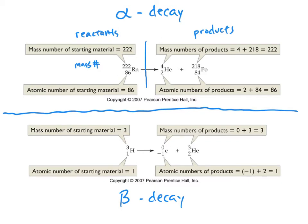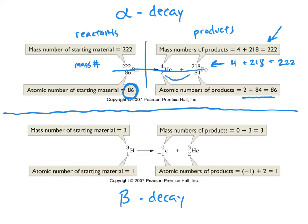For the alpha decay example, the mass number on the reactant side is 222, so the top numbers on the product side must also equal 222. We have 4 plus 218, which equals 222 — it checks out. The bottom atomic number is 86, and 2 plus 84 equals 86. So the top numbers are equal and the bottom numbers are equal on both sides.